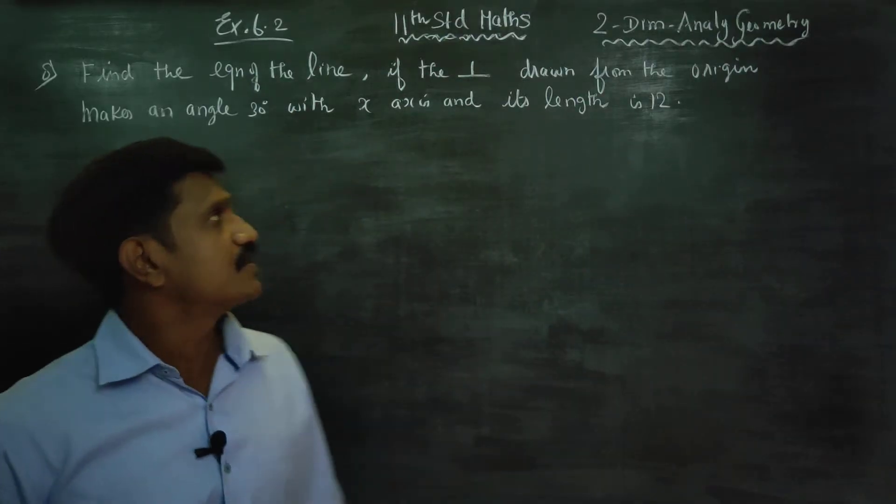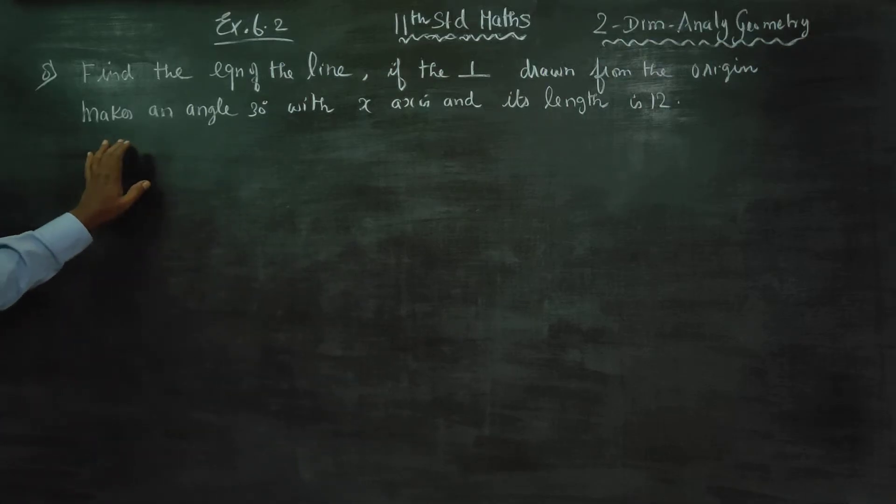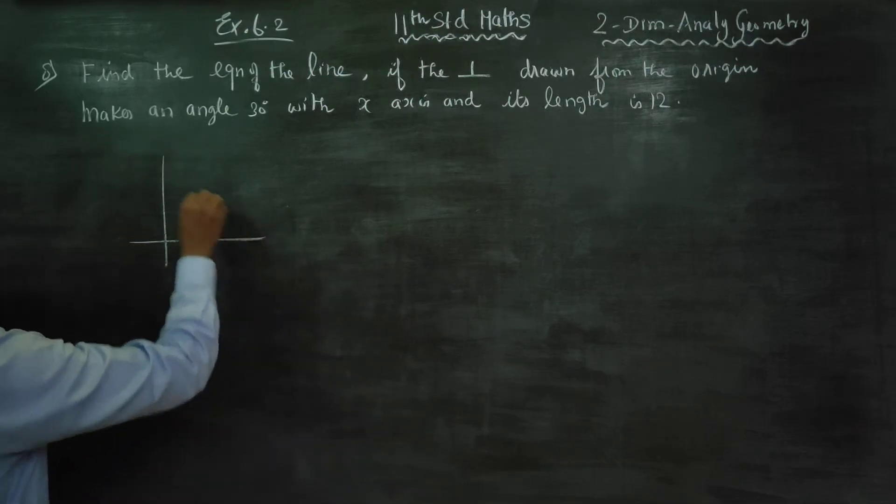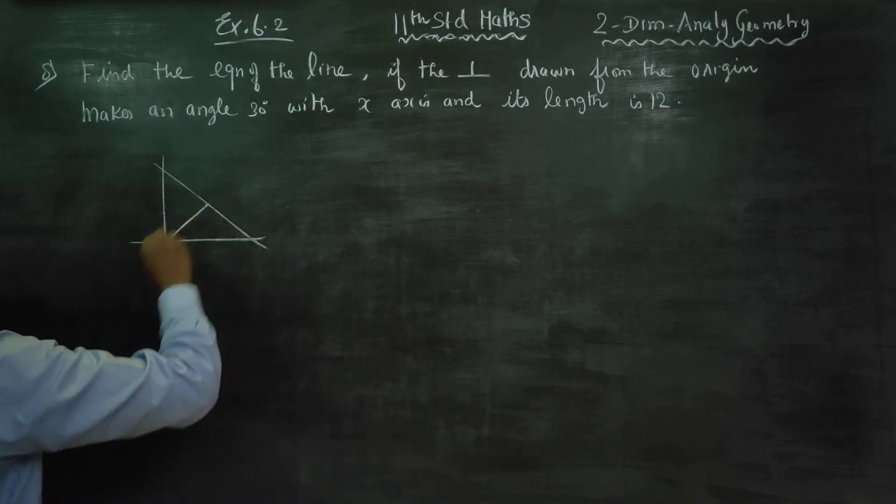find the equation of the line. If the perpendicular drawn from the origin makes 30 degree with the x-axis and its length is 12. Actually, in the matheri, one straight line is. Here is a perpendicular line.